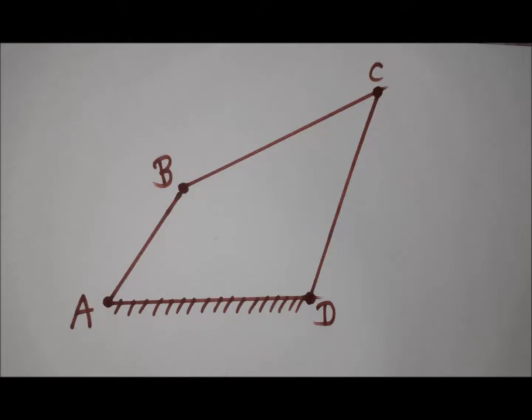Consider a 4-bar mechanism as shown on the screen. Link AD is the fixed link, link AB is the input link, link BC is the coupler, and link CD is the output link.